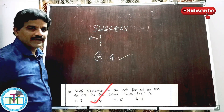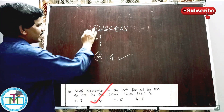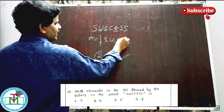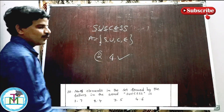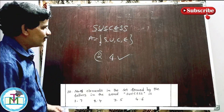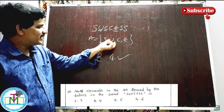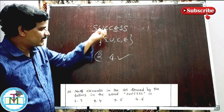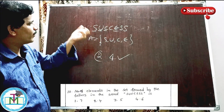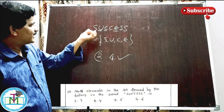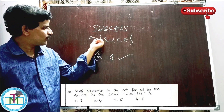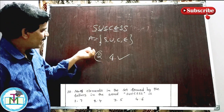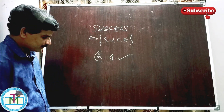The number of elements is 4, so option 2 is the right answer. The set formed from the word 'success' is {S, U, C, E}, which has 4 elements.